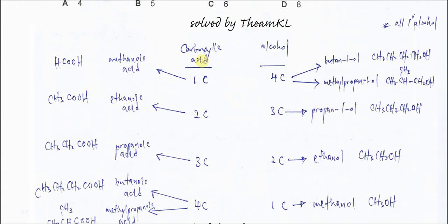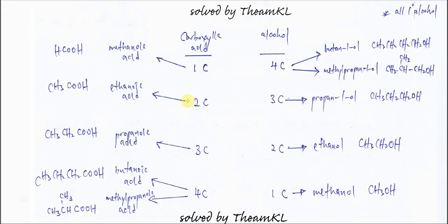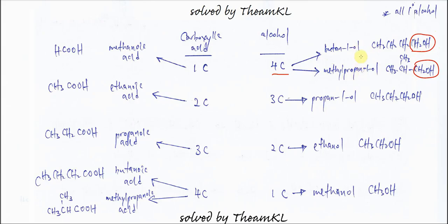Starting with a one-carbon carboxylic acid — that's methanoic acid — reacting with a four-carbon primary alcohol. The four-carbon primary alcohols are butan-1-ol and 2-methylpropan-1-ol. Both of these primary alcohols react with methanoic acid, so two esters are formed here.